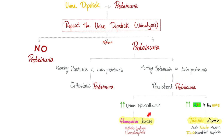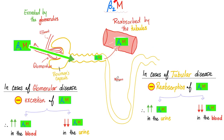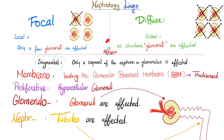Then, should we blame the glomerulus or blame the tubule? If you find increased urine microalbumin, that's a glomerular disease. If you find increased beta-2-microglobulin, it's a tubular disease. The beta-2-microglobulin was discussed before in a separate video. It helps you blame the glomerulus or blame the tubule — this is the nephrology lingo.